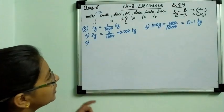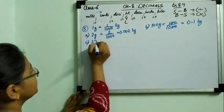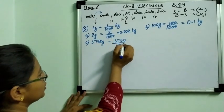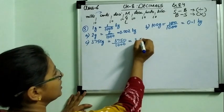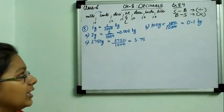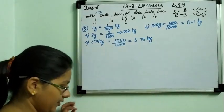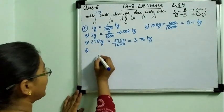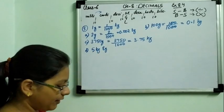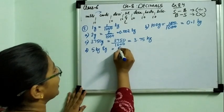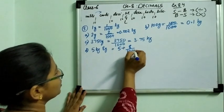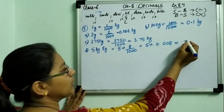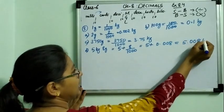In part C it is 3,750 gram. These are very short questions. So 3,750 divided by 1000 — the last zero cancels and we get 3.750, which is 3.75 kilogram. In part D it is 5 kilogram and 8 gram. So 5 plus 8 upon 1000 equals 5 plus 0.008, which equals 5.008 kilogram.